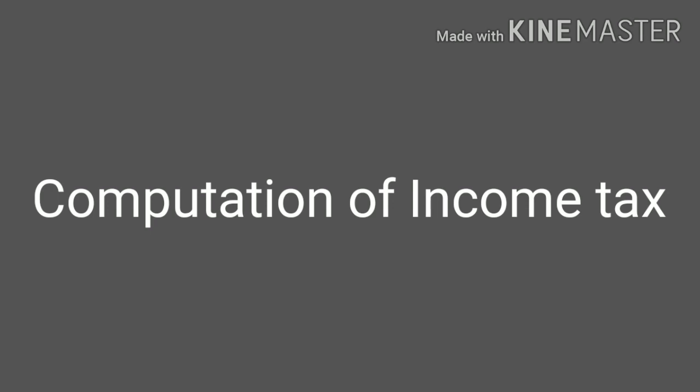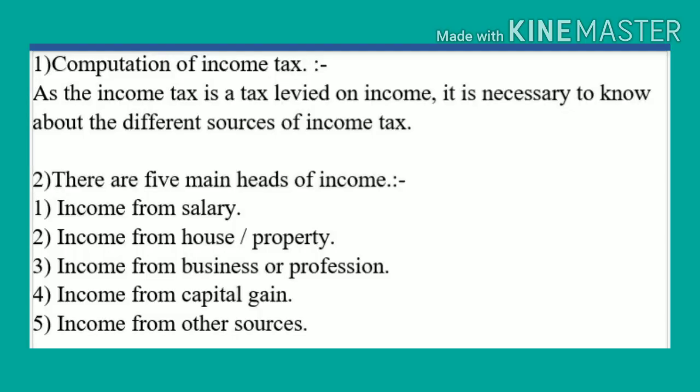While computing income tax, we have to see the different sources of income — from where the income we are getting. There are five main heads of income source: income from salary, income from house or property, income from business or profession, income from capital gain, and income from other sources. These are the five main sources of income.